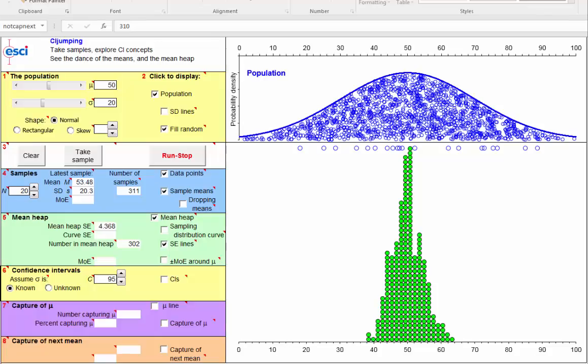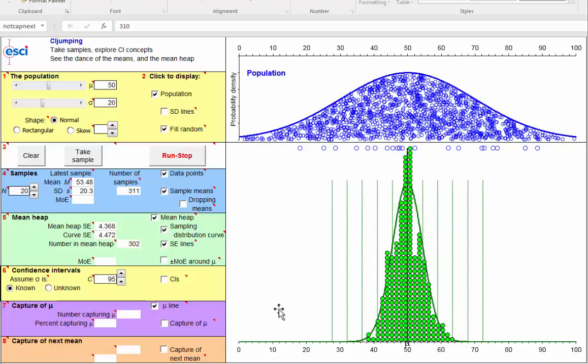We're very close to confidence intervals. Here is the mean heap with about 300 sample means, samples each of size n equals 20. Those sample means are clustered around the population mean mu and I can put on the sampling distribution curve, this normal distribution here and the standard error lines.